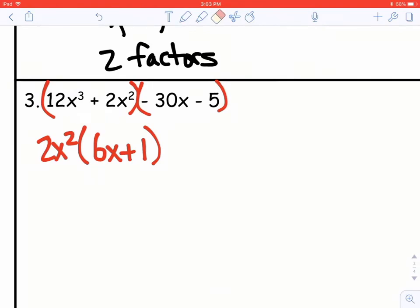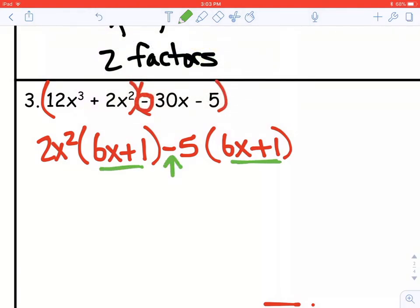And then, let me erase that for now. Out of the second two terms, take out whatever that sign is at the beginning, so negative in this case. And then 30x minus 5, their greatest common factor would be 5. So if I take out a negative 5, I need to have a 6x plus 1 left over. Notice like I mentioned on the last example, these two have to match. So it's important to take out this negative to make them matching.